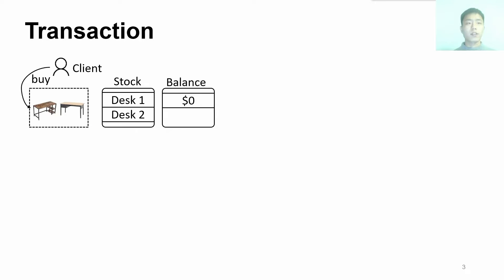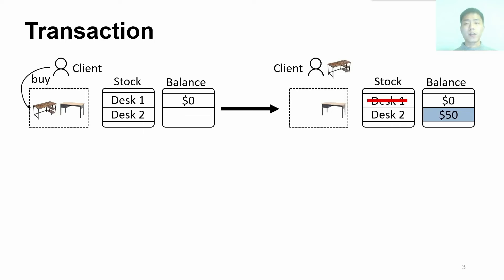Transaction is a fundamental requirement to ensure the ACID property for applications on the disaggregated architecture. For example, after a client buys a desk online, the shop needs to update its stock and balance in an atomic manner, which is implemented by a transaction.